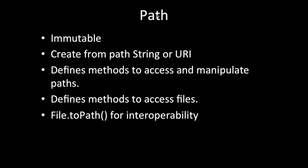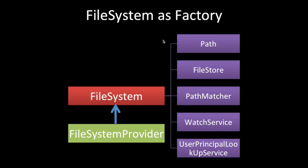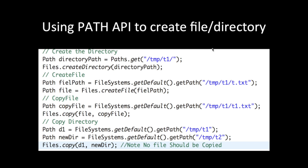The Path API is immutable and is created from a path string or URI. It defines methods to access and manipulate paths, defines methods to access files, and is interoperable with the file.toPath() method. This API is the key of the file system API — everything will start from the path.